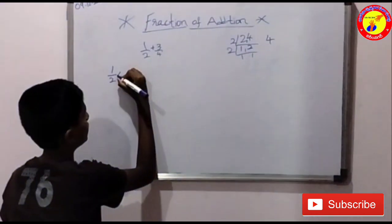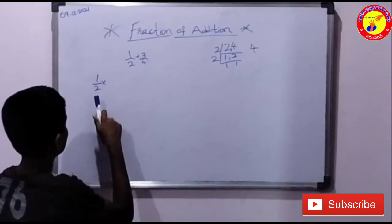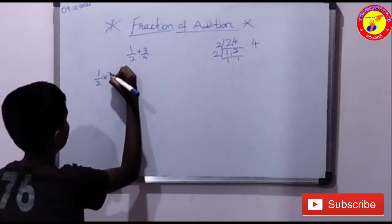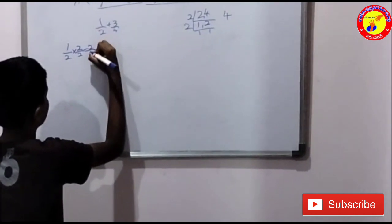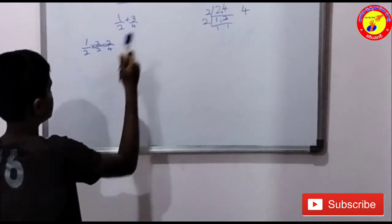1 by 2 into - we should take 2 times 2 to get 4. 2 by 2 is equal to 2 by 4. The answer is 2 by 4.